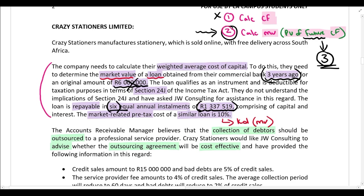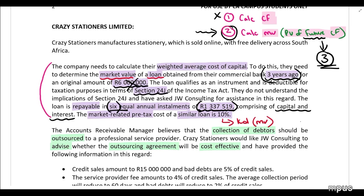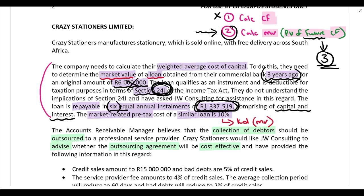Apart from the future cash flows, in Step 2 we also need to take tax into account, and that's where Section 24J comes in. This installment comprises both interest and capital — there's a capital portion and an interest portion. Only the interest portion is deductible for tax purposes; the capital portion is never deductible. Under Section 24J, the tax deduction is taken as the interest accrues over the period, not when the interest is actually paid. So we need to know the split between capital and interest in each installment to calculate the tax benefits.